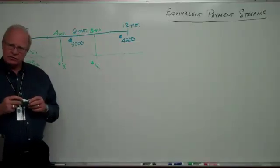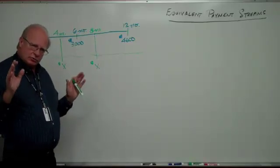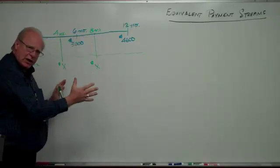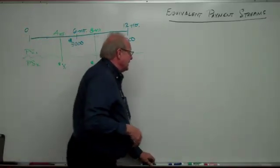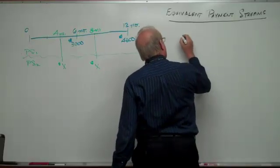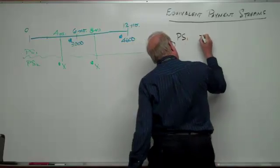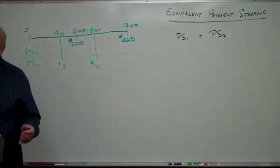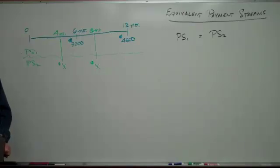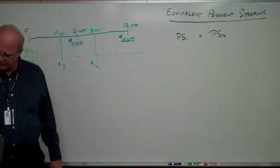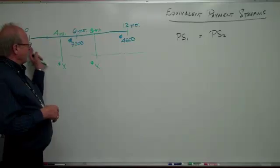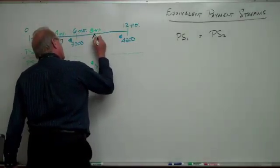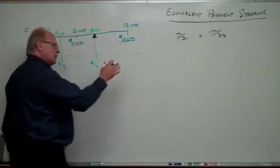This thing below the line we'll call payment stream two. The general principle for solving a question like this is both parties should be in agreement as long as payment stream one is equivalent in every way to payment stream two. You can only compare money when it's at the same point in time, so we pick a focal date. We're going to pick eight months from the original date of the loan.